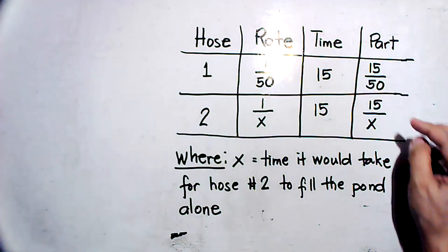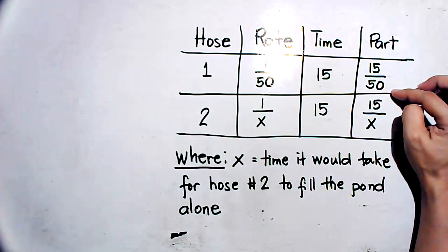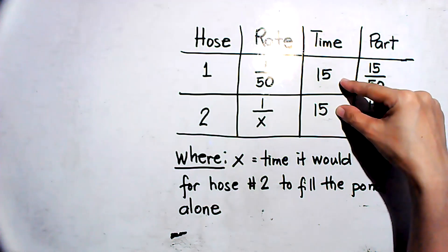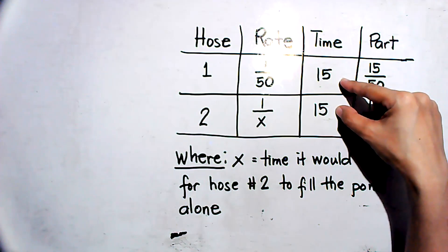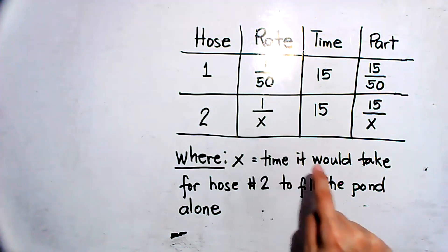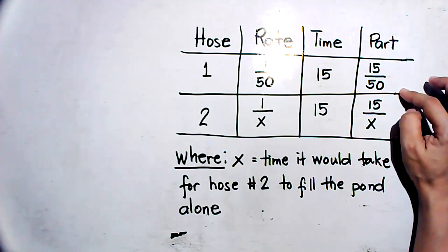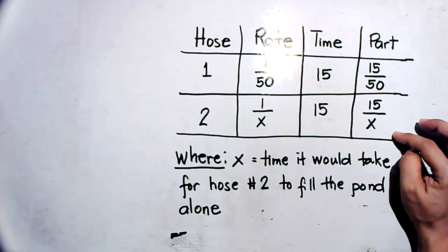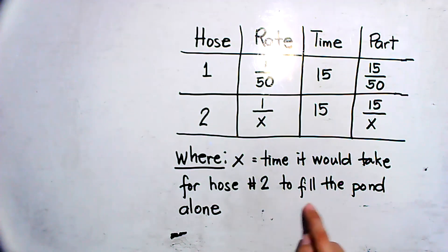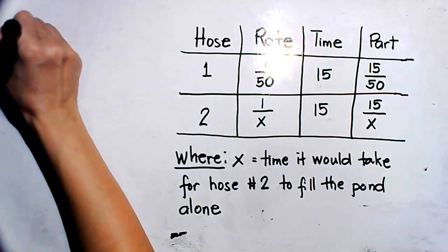To summarize: the part of work done by the first hose is 15 over 50, since the total time consumed filling the pond with both hoses is 15 minutes and hose one has a rate of one per 50 minutes. The part of work done by hose number two is 15 over x, because we don't yet know the time it would take for hose number two to fill the pond alone.